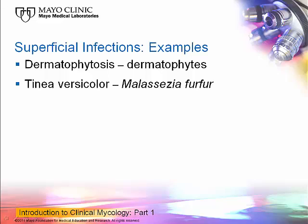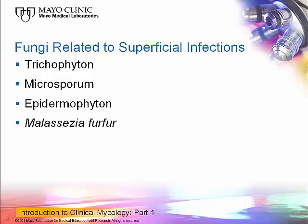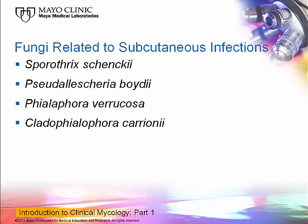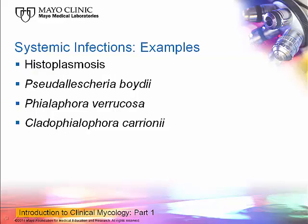The hardest part of mycology is the terminology — the language. For superficial infections, dermatophytes are the primary organisms. Another organism that causes tinea versicolor is called Malassezia furfur. The dermatophytes belong to three groups: Trichophyton, Microsporum, and Epidermophyton. For subcutaneous infections, sporotrichosis, mycetoma, chromoblastomycosis, and phaeohyphomycosis are caused by Sporothrix schenckii, Pseudallescheria boydii, Phialophora verrucosa, and Cladophialophora carrionii, respectively. The names can get complicated, but they are not that hard once you learn them.